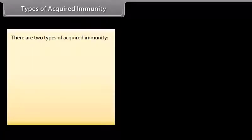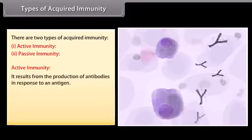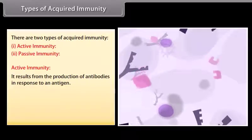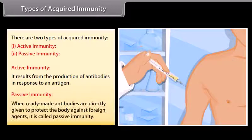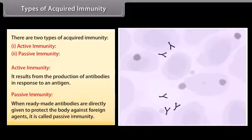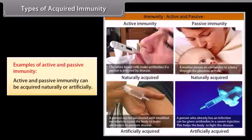There are two types of acquired immunity: active immunity and passive immunity. Active immunity results from the production of antibodies in response to an antigen. Passive immunity is when ready-made antibodies are directly given to protect the body against foreign agents. Active and passive immunity can be acquired naturally or artificially.